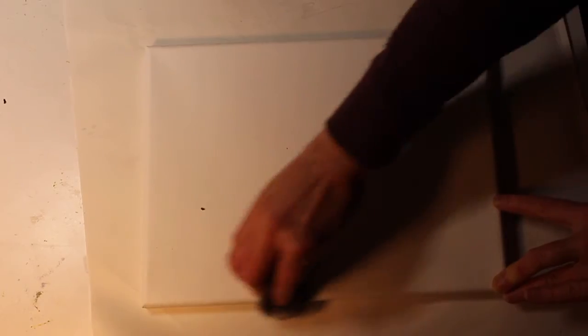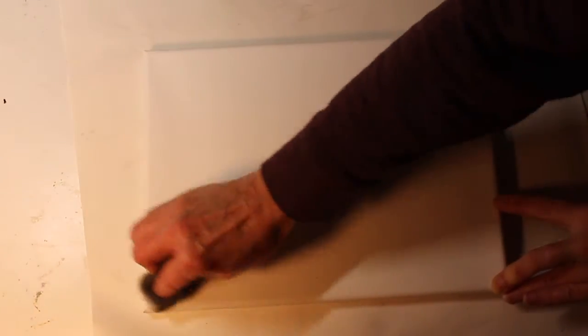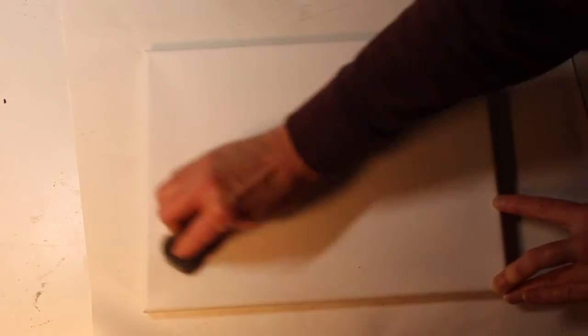Once this is dry, once again, you can sand it. Now depending on how smooth you want your surface, you may decide that just two layers of gesso is plenty or you may decide to do a third and sand in between.